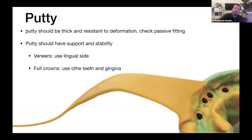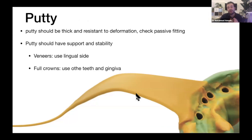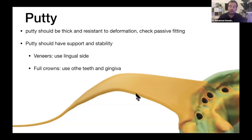Some quick tips about the putty and mock-up: you want your putty to be thick when taking it off the wax, because a thin putty will easily deform. If you put a thin putty layer in the mouth, you can twist it and it won't give you an accurate replica of the wax you spent so much time perfecting. Make sure your putty is thick enough to resist deformation.